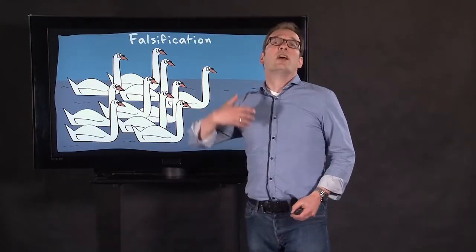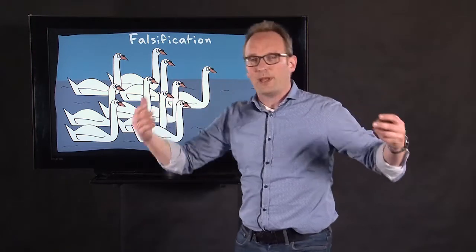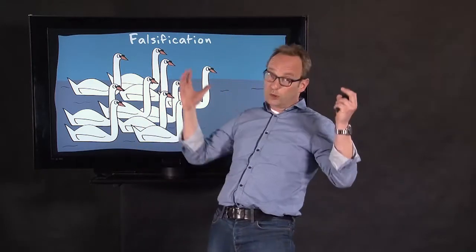Now, falsification. If we see one white swan, we would say, okay, this is one white swan. If we see another white swan, we would say, okay, maybe all swans are white. And then, if you've seen several white swans, you can say, well, every swan is white. Now, that is verification.